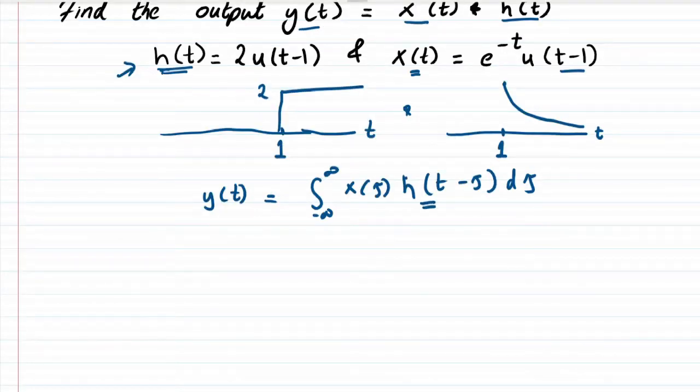This h(t-τ) would mean that h(-τ) would simply be an inversion of this signal, so from plus 1 we would now have minus 1. This signal was moving towards right, so now it is towards left.